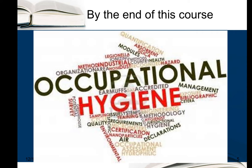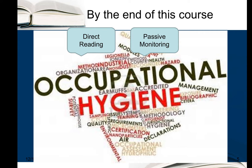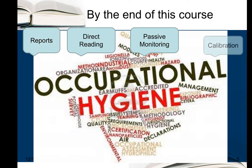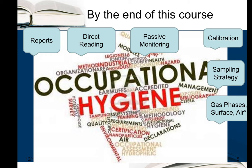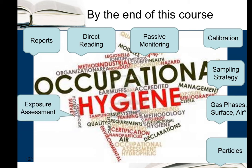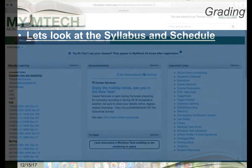By the end of this course, you'll learn about passive monitoring and direct reading instruments. We'll go over report writing, calibration, how to develop a sampling strategy, and sampling protocol selection. We'll look at sampling for different gas phases, surface sampling, aerosols, as well as particles. We'll also do some exposure assessment.